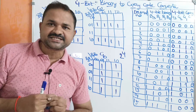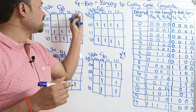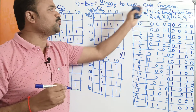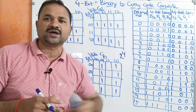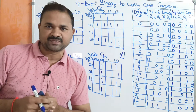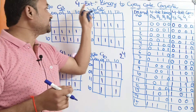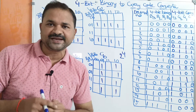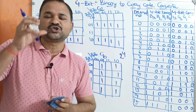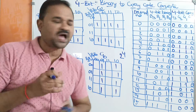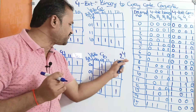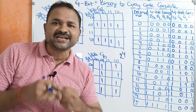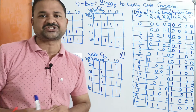Now let us discuss about the 4-bit binary to gray code converter. Here the number contains 4 bits, so totally we will have 2 power 4, that is 16 combinations.